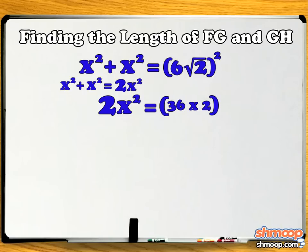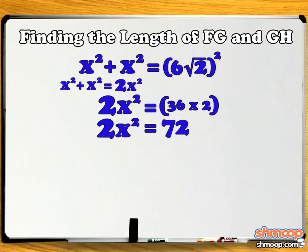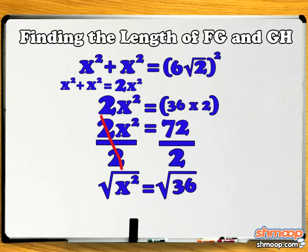But we still need to multiply 36 times 2, which gives us 72. Our equation is now 2X-squared equals 72. Divide both sides by 2 to give us X-squared equals 36. Taking the square root of both sides gives us our value of X, which is 6 millimeters.